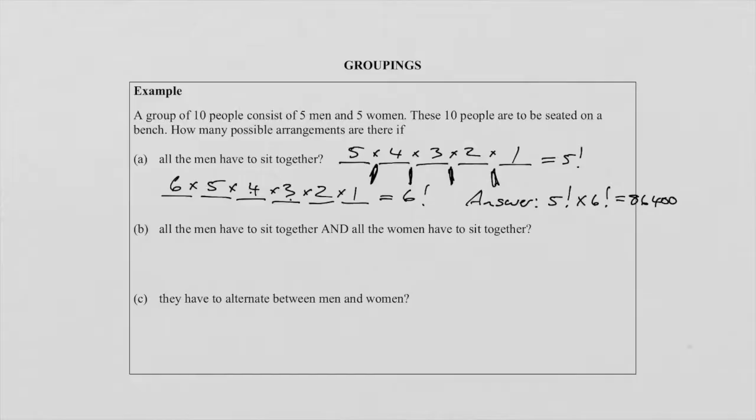We can group the males, group the females, or group both. The next part of the question asks us to group both the men together AND the females together. So now we have two groups — one group of men and one group of females.